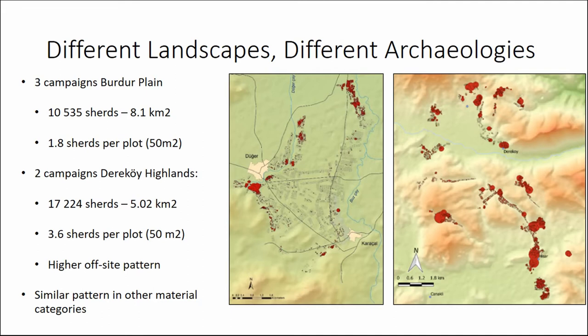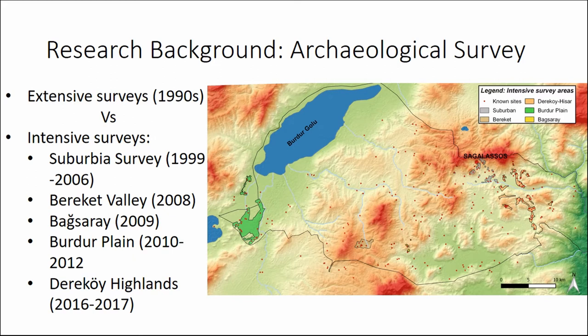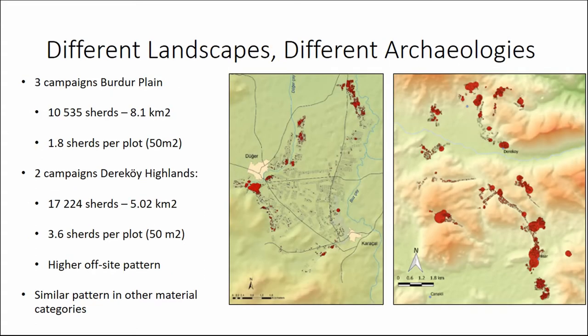For example, comparing the Burdur plain — a typical lowland fertile alluvial setting where you'd expect a high number of finds in Turkey — surprisingly, we found quite a bit more in the highlands than in the lowlands. We found periods which were entirely absent or very poorly represented in the lowlands but present in the highlands. We recovered more material in two highland campaigns than in three campaigns in the Burdur plain.